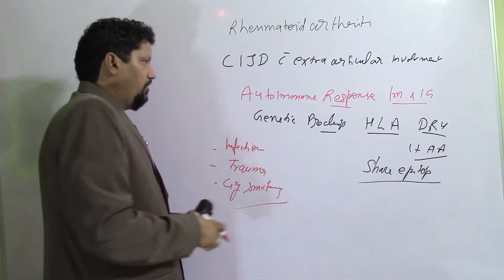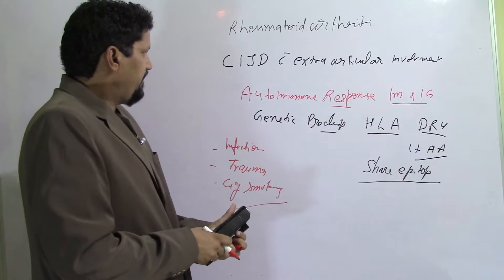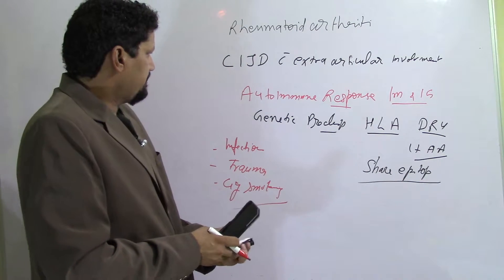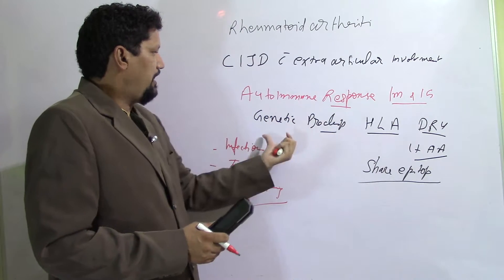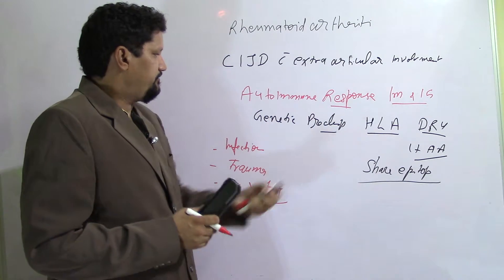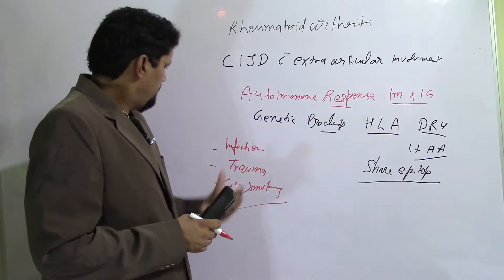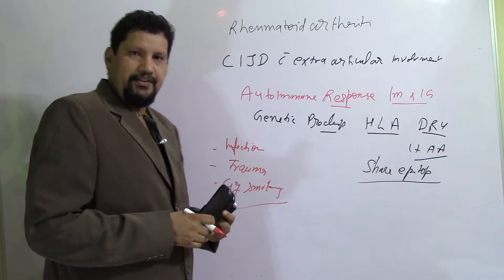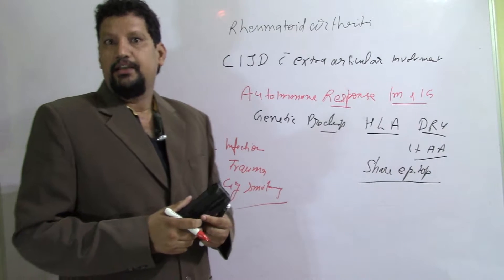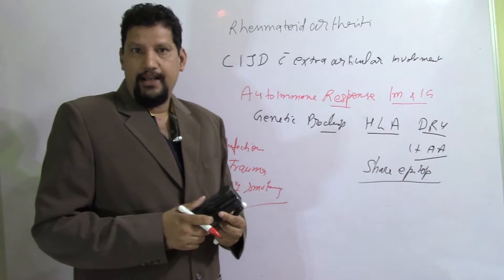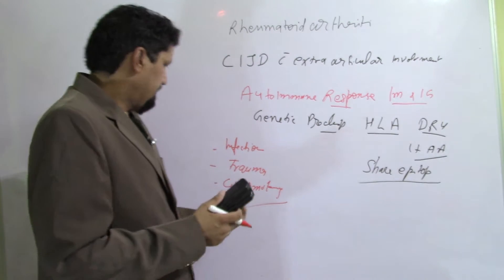To summarize, predisposing factors for rheumatoid arthritis are autoimmune response and genetic factors. The disease is further triggered by infections, trauma, and smoking.